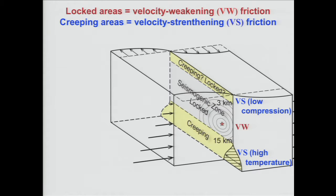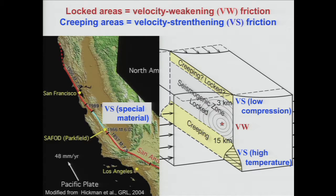We can have velocity strengthening behavior under these specific conditions, and it jives perfectly well with our schematic. Here near the surface there may be creep because of low compression, and here at depth there may be creep because of high temperature — about 300 degrees Celsius higher than the surface. And then looking through the fault, maybe here there are some special kinds of rocks in this little segment. Indeed, there was the SAFOD drilling project — the San Andreas Fault Observatory at Depth — and it did find very special minerals there presumably not present on the rest of the fault.